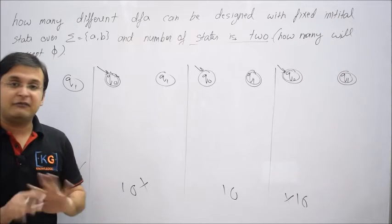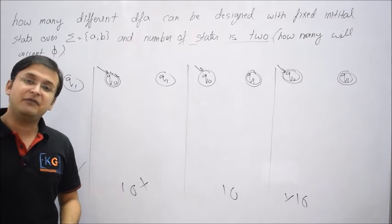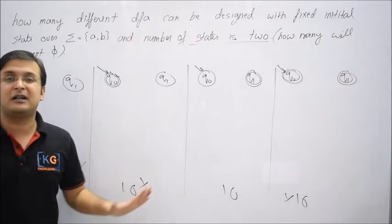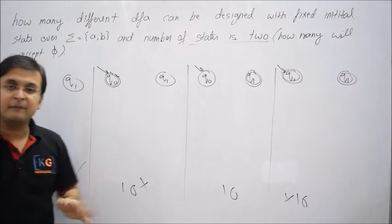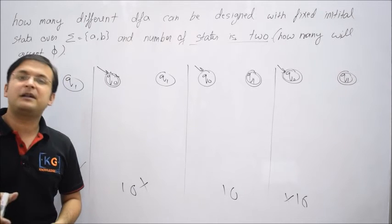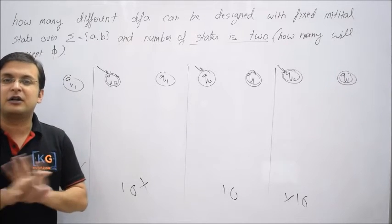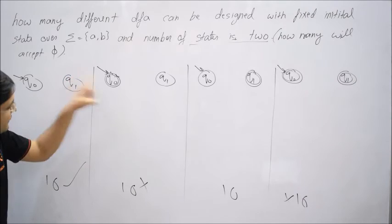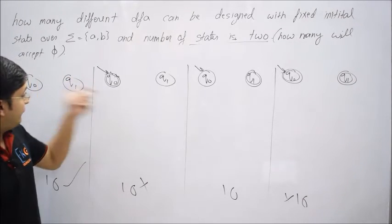If epsilon is going to be accepted then you understand the language is not empty. If I say the language is empty it means nothing at all, an empty set Φ. But null is a string of length 0, so even if you accept a null string it means the language is non-empty.